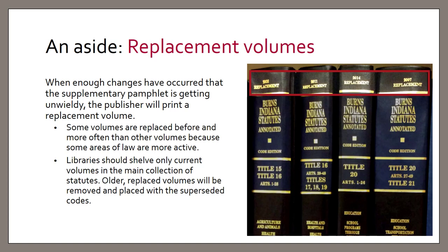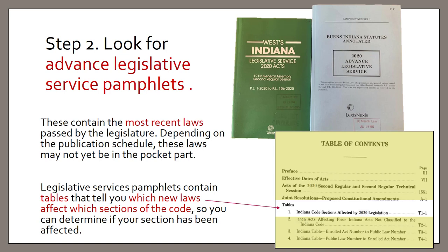After checking the pocket part or supplementary pamphlet, you need to check the code's advanced legislative service pamphlets, usually shelved at the very end of the code set. These pamphlets provide the latest laws as passed by the legislature and include tables listing code sections affected by new laws. Use the table of contents in the advanced legislative service pamphlets to identify and locate the tables, the text of the acts, and the subject index if there is one.